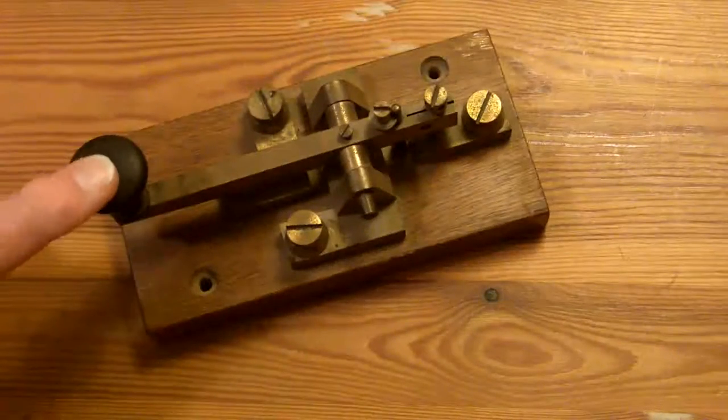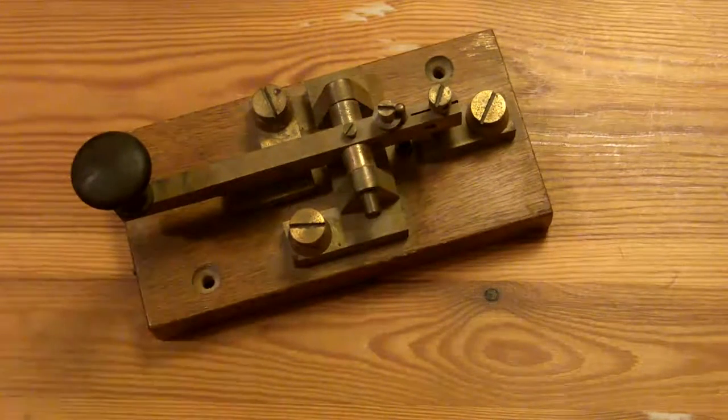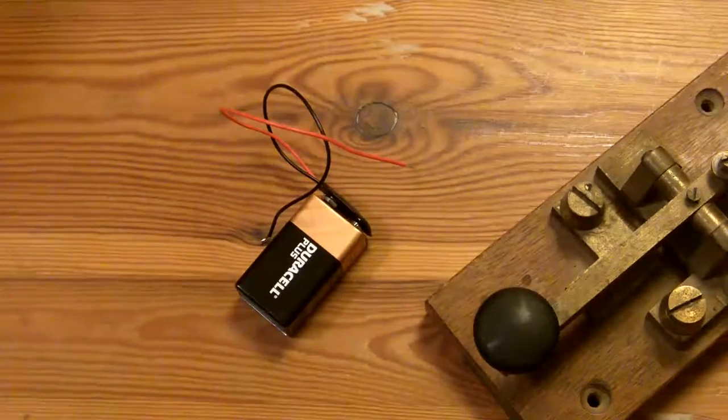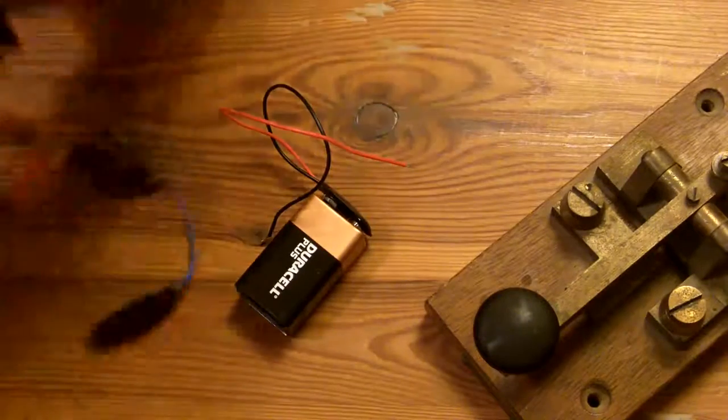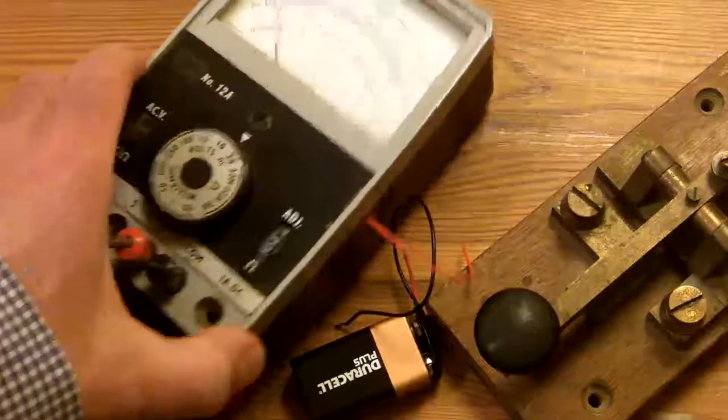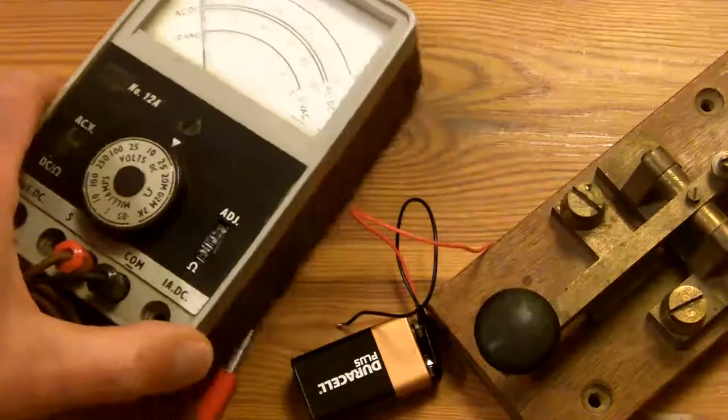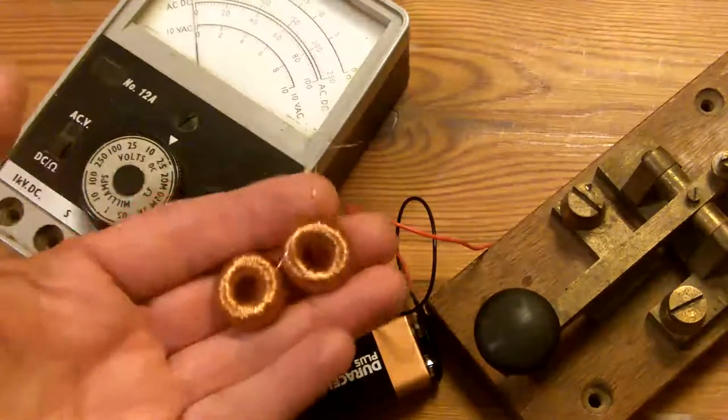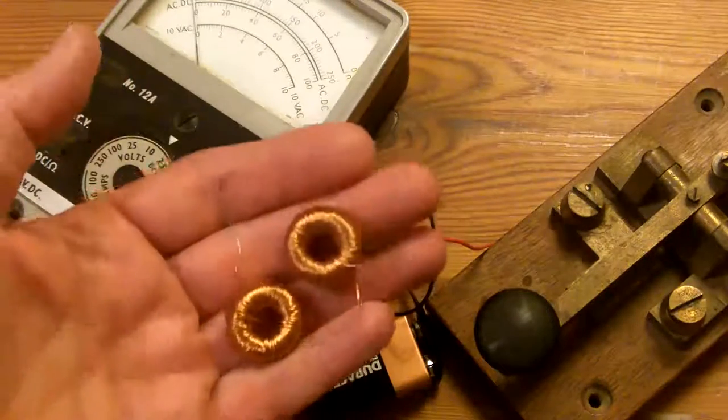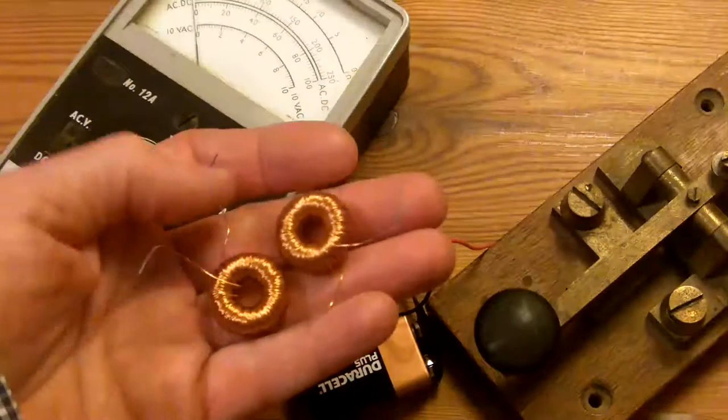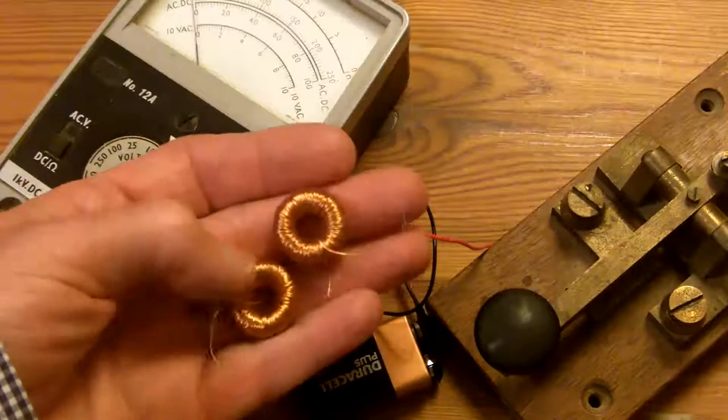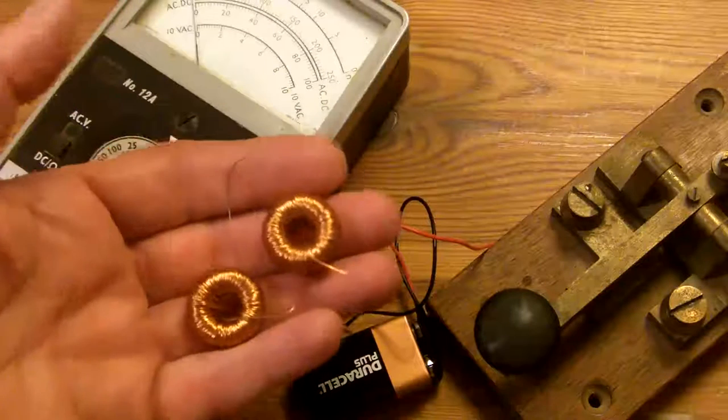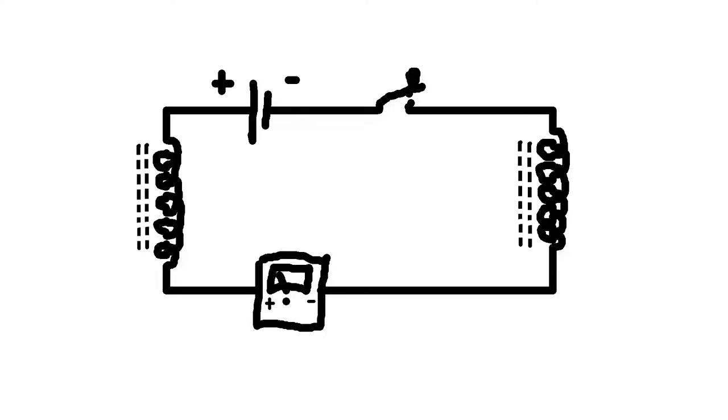Here I've got an old Morse key. We've got our 9V battery and I've got a beat up old meter. And what I'm going to do is connect those in series. Oh, and by the way, I'm also going to connect these two inductors in series. They serve no function at this stage, but I just want them to be included in the circuit all along.